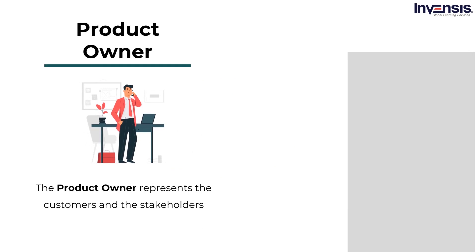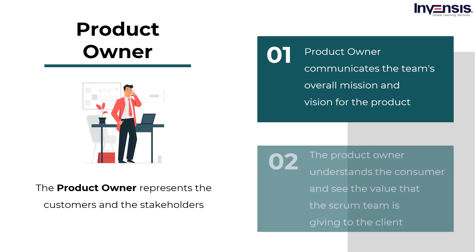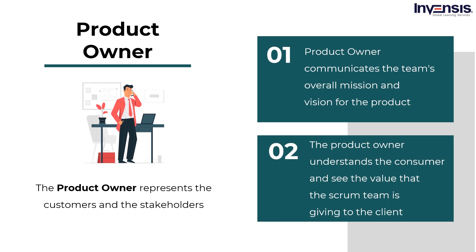The product owner represents the customers and the stakeholders. There is usually only one product owner who communicates the team's overall mission and vision for the product. They make the decisions on product development, define and prioritize tasks, monitor the product backlog, and review the completed work after each development cycle. The product owner should understand the consumer and see the value that the Scrum team is giving to the client, and must also consider the demands of the organization's other stakeholders, prioritizing all inputs. This is their most crucial role, as competing priorities and unclear instructions can limit the team's performance and compromise the important trust connection between the business and the development team.